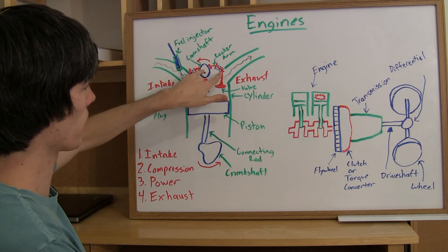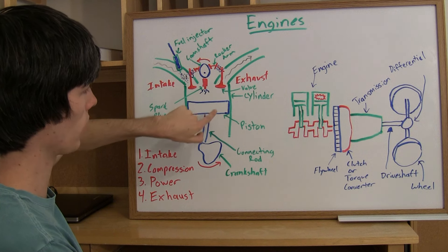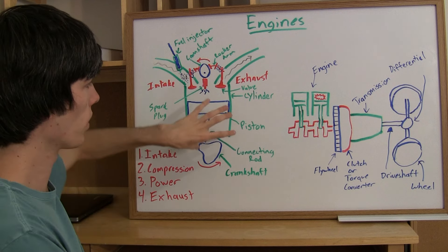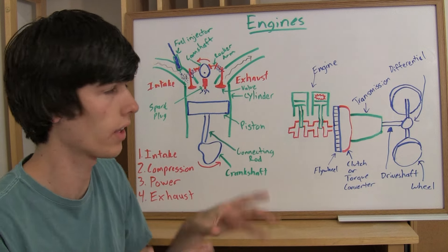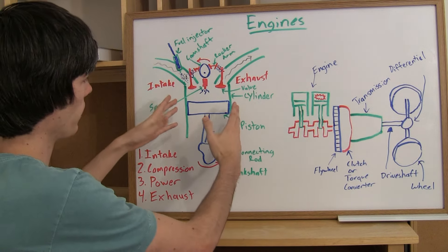We've got rocker arms which connect the camshaft to the valves. We've got these valves here which open and close allowing air to come in or go out depending on which side. We've got the cylinder here so depending on what kind of engine you have, V8, V6, that's how many cylinders you have. Six cylinders for a V6, eight cylinders for a V8.